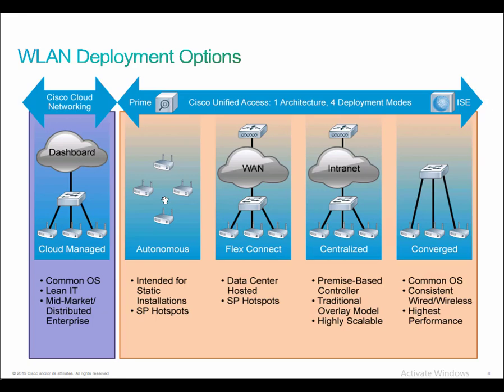Cloud managed again: mid-sized deployment, very turnkey solutions, scales for small businesses, you don't need a lot of IT staff or high operational cost. Autonomous: maybe for hotspots or small enterprises with individual APs — very simple to deploy, very cost-effective, but if you have lots and lots of access points, it doesn't really work out that well.